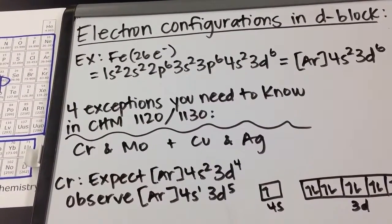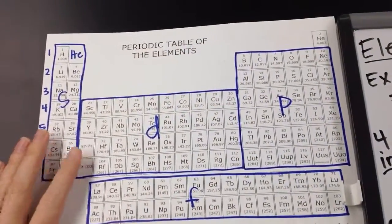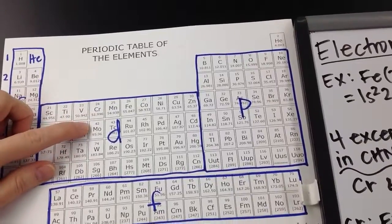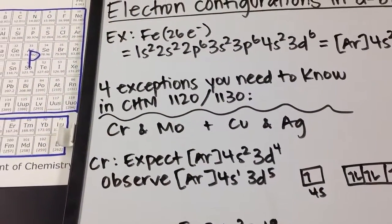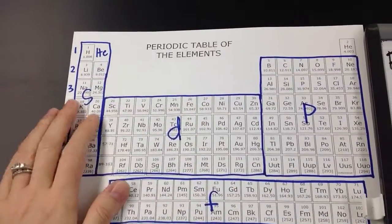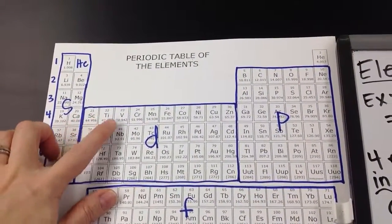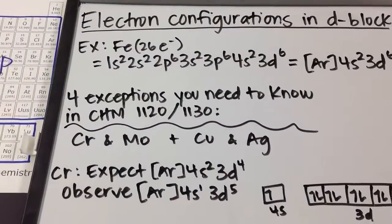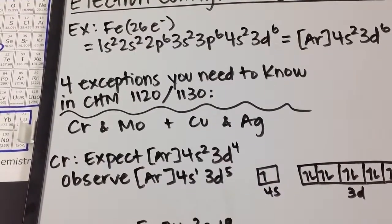Let's talk about the chromium molybdenum example first. So I pick chromium and molybdenum together because they are directly underneath each other. So chromium, you would expect 4S2, 3D4. Because chromium's right here, so it'd be 4S 1, 2, 3D 1, 2, 3, 4. That's what you would expect. But what you actually observe is you get 4S1, 3D5.